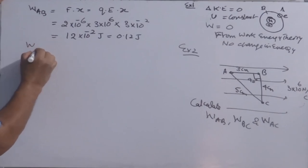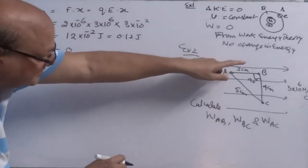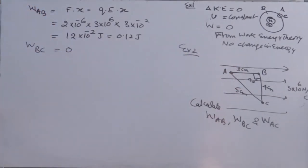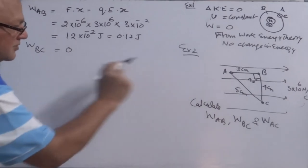Work done between B and C is 0, because this is a plane perpendicular to uniform electric field. And plane perpendicular to uniform electric field is an equipotential surface. I repeat, point B and C lies on a plane perpendicular to electric field.